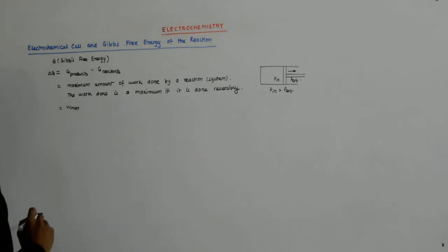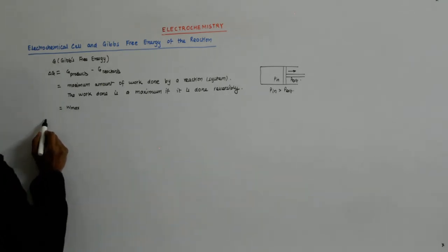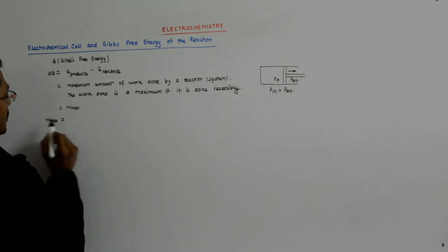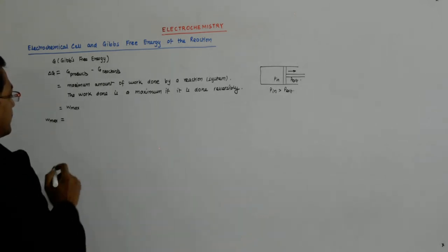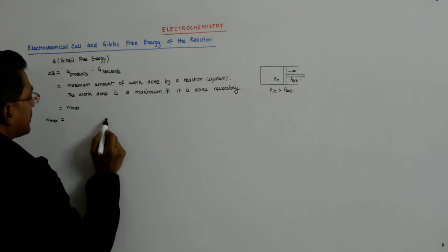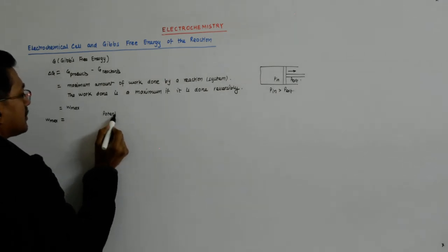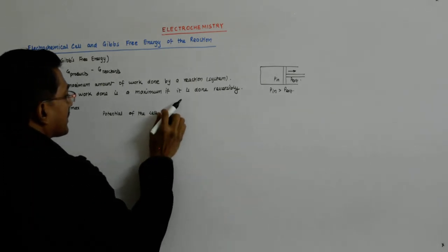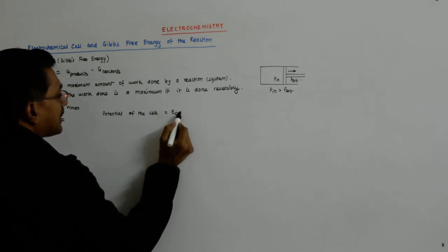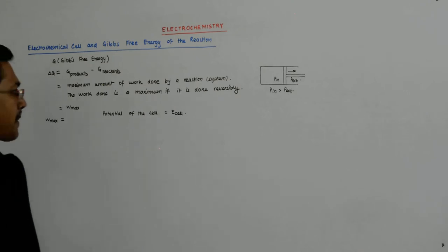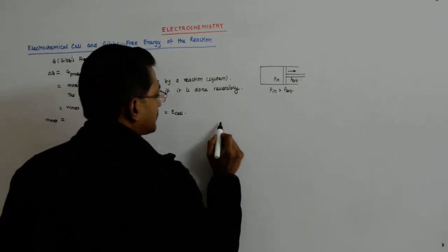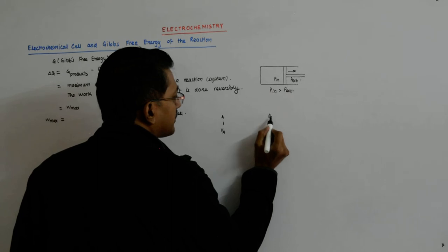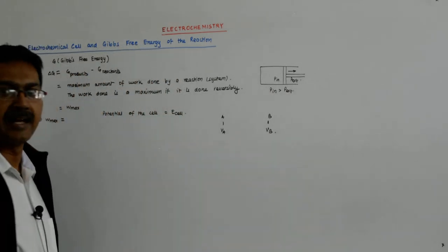The work done equals W-max. What is the maximum work done in a reaction? W-max equals what? If the potential of the cell is E-cell, then what is the work done? Let us go to electricity for this. Let us say we have two points A and B at potentials V-A and V-B.